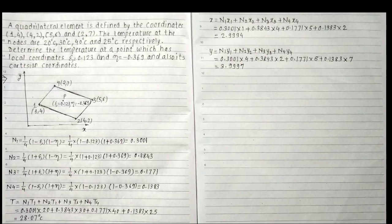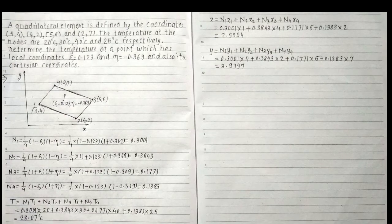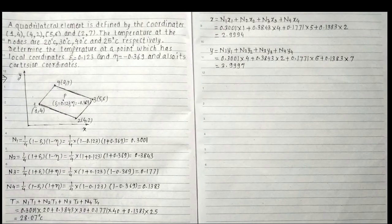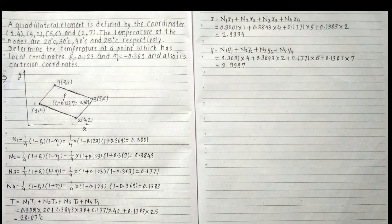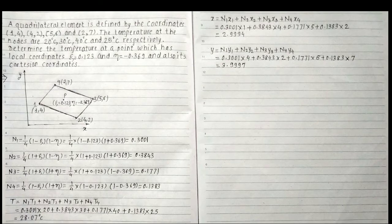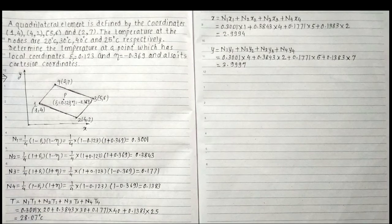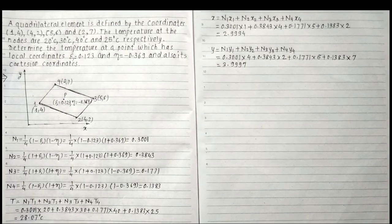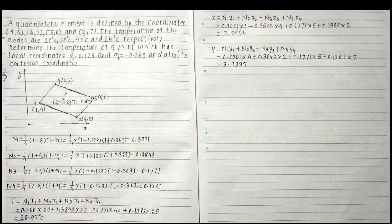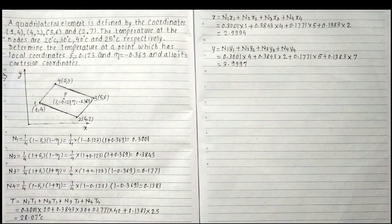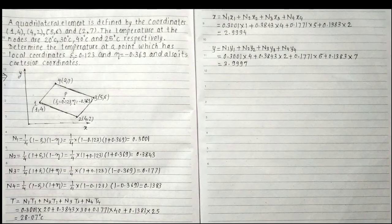N2 is equal to 0.3843. N3 is equal to (1/4)(1 + zeta)(1 + eta) = (1/4)(1 + 0.123)(1 + (-0.369)) = (1/4)(1.123)(0.631), so N3 is equal to 0.1771. N4 is equal to (1/4)(1 - zeta)(1 + eta) = (1/4)(1 - 0.123)(1 - 0.369), so N4 is equal to 0.1383.